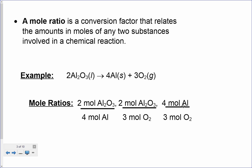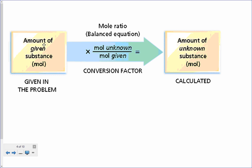Or we can flip these over — put oxygen on top and aluminum on the bottom — giving three to four, or three to two, or four to two. There are six different ways we could write ratios for these three chemicals. We'll use these mole ratios on the next slide.